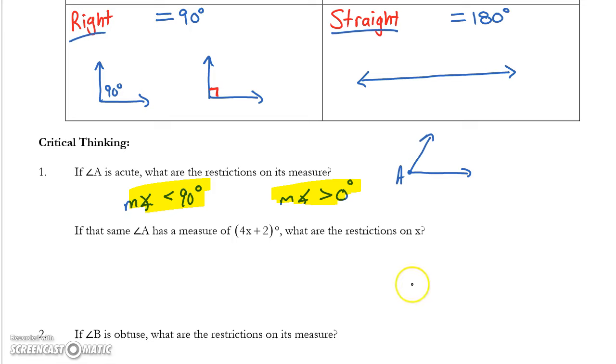The second part is where things can get a little bit tricky. It's asking that the same angle A, it's telling you it has a measure of 4x plus 2 degrees. What are the restrictions on x? This is really two parts. It's a substitution problem, and then solving inequalities. I know that this is the measure of the angle. So I'm going to substitute in, in both of these inequalities, 4x plus 2 for the measure of the angle.